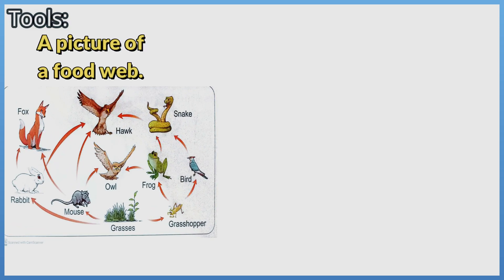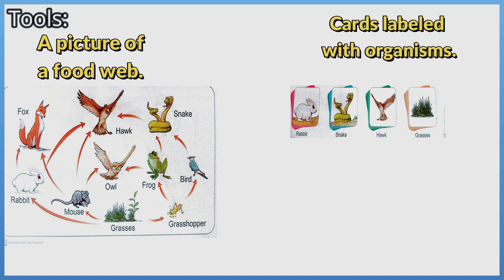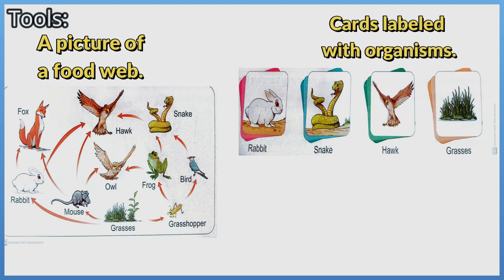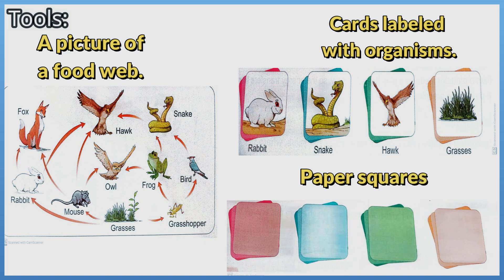Tools needed: a picture of a food web, cards labeled with organisms, and paper squares that represent the flow of energy in an ecosystem.